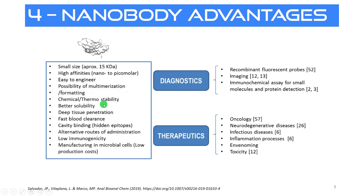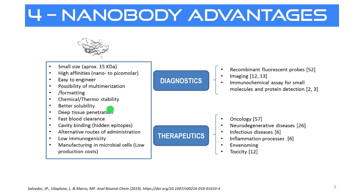They're more stable in a thermo and chemical way — so higher temperature exposure, or higher or lower pH exposure, and they stay in their nanobody format. They are more soluble. Because they're smaller, they can penetrate tissue deeper, for instance in a tumor. They can go through the lining of your kidneys faster, so blood clearance is faster. They can bind to hidden epitopes on a certain protein or target.